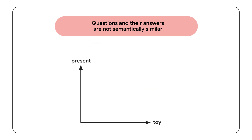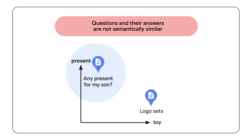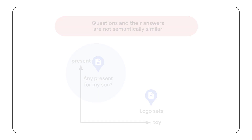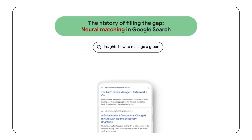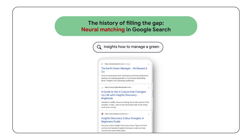Similarly, if you ask a RAG system with similarity search 'what's the best birthday present for my son?', it's unlikely to retrieve items like Nintendo Switch or Lego sets, as these answers are not semantically similar to the question. Technically speaking, there's a significant gap between the distributions of the question embedding space and the answer embedding space, so a simple similarity search isn't effective.